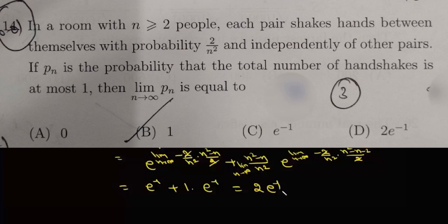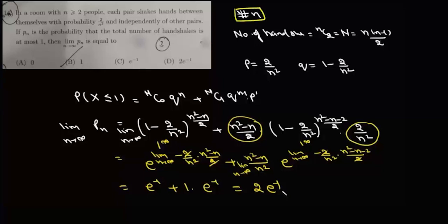In a room with n people, each pair shakes hands with probability 2/n², independently of other pairs. If pn is the probability that the total number of handshakes is at most 1, find the limit as n tends to infinity of pn. The total number of possible handshakes is nC2 = n(n−1)/2, call this capital N. The probability of success (handshake) is p = 2/n², so the probability of failure is q = 1 − 2/n².